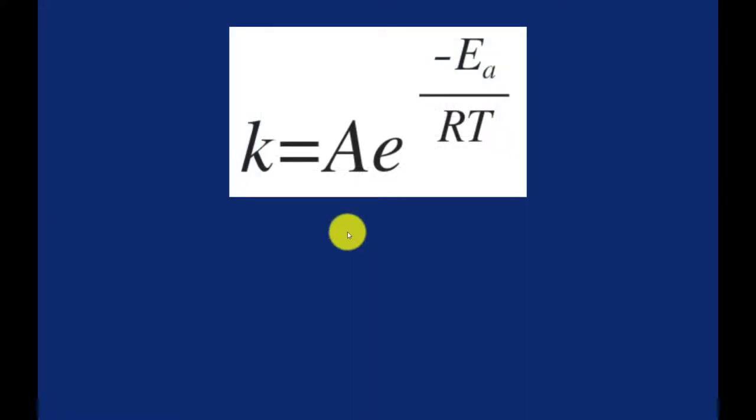The Arrhenius equation is often written like this. So again, here's your rate constant, and then Z and P are combined into this term A, which is your frequency factor. You have your activation energy, your ideal gas constant. Again, we're going to use that in joules, and then our temperature in Kelvin.